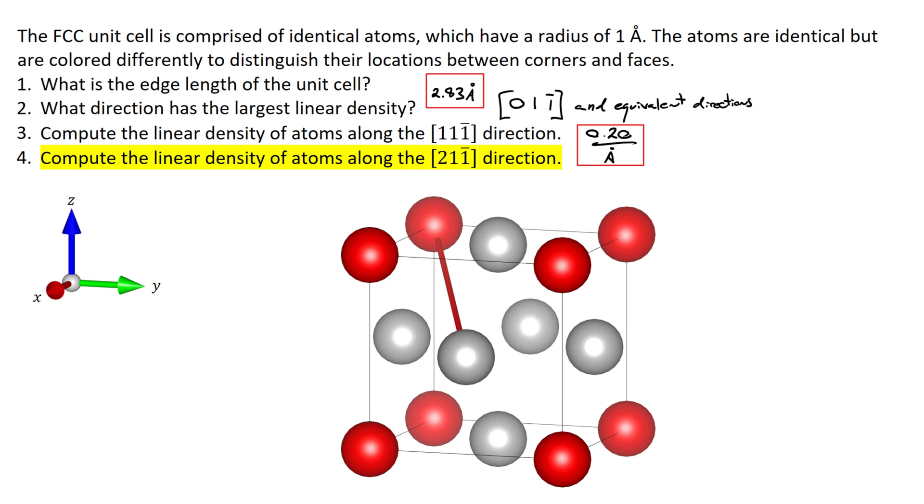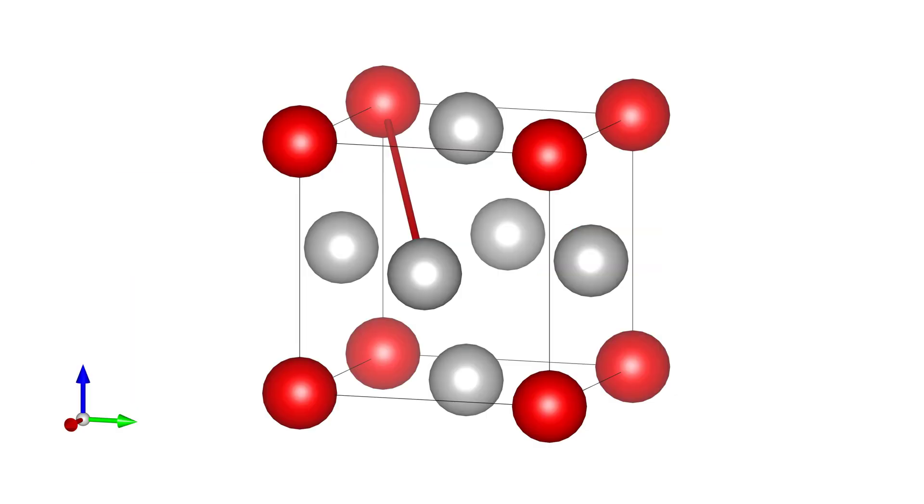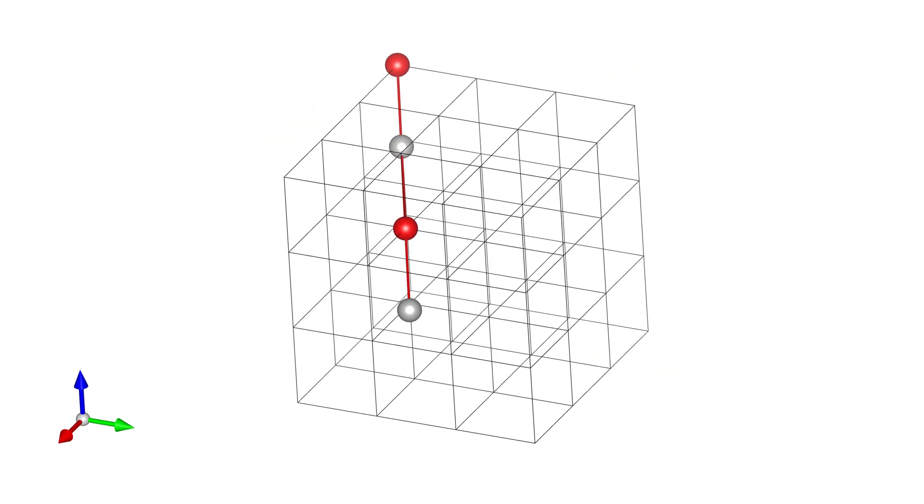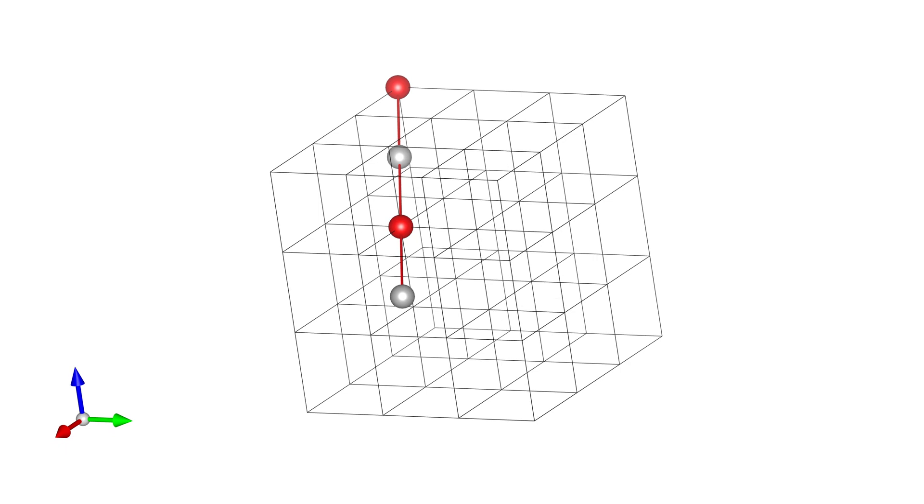And finally, we're being asked to calculate the linear density along the 2, 1, negative 1 direction, which is shown here. If we look at a few more unit cells, we're trying to figure out the linear density of atoms along this line.